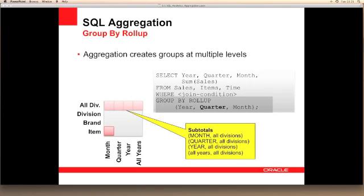Now, if we want to know the total sales for all items across month, quarter and year, then we can simply drop the division level from our roll-up clause and just specify the time elements of year, quarter and month. This will create the total for all divisions across those time periods, including the all years total.